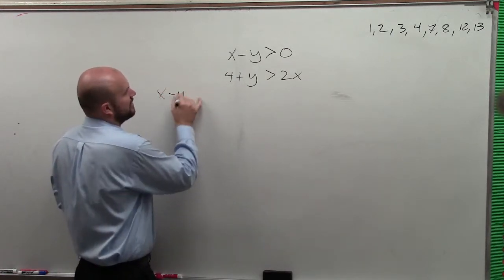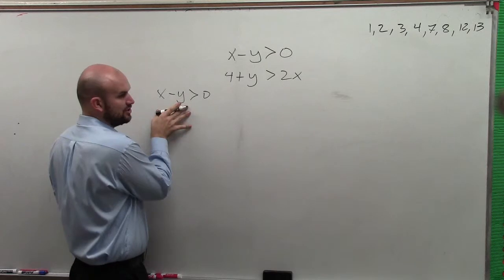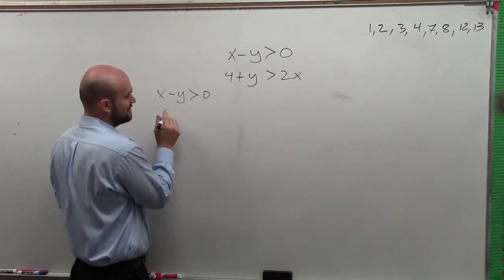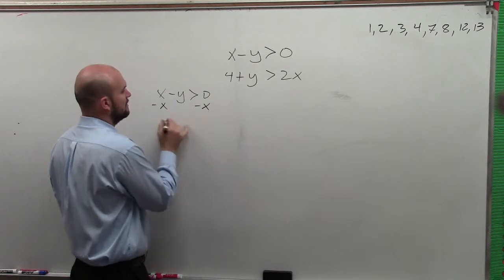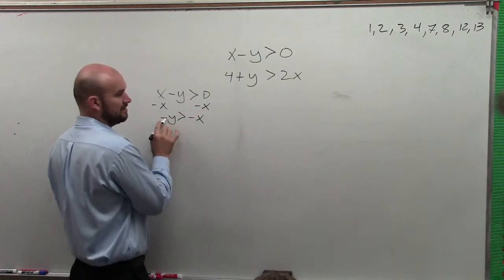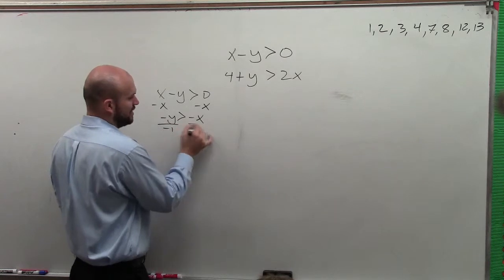So basically, you just have x minus y is greater than 0. To do this, though this one people will make mistakes. To solve for this, there's a couple different ways you can do it. We can subtract x. Negative y is greater than negative x. We've got to solve for y, so I divide by negative 1.